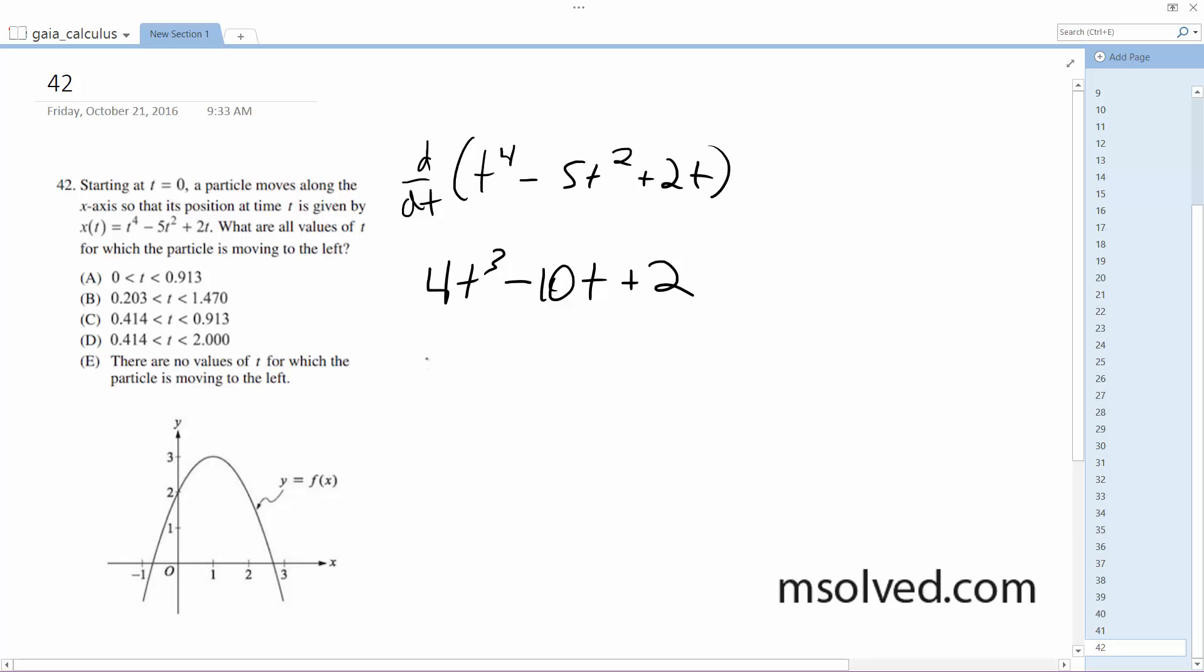t ends up being 0 or the changing points of 0.20336 and roughly 1.696. And that closely matches up with b here.